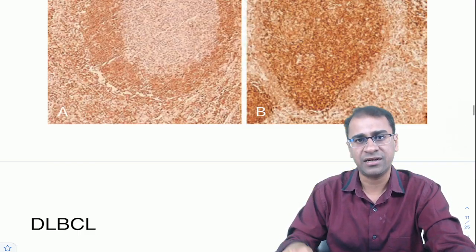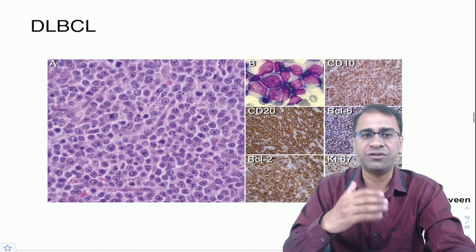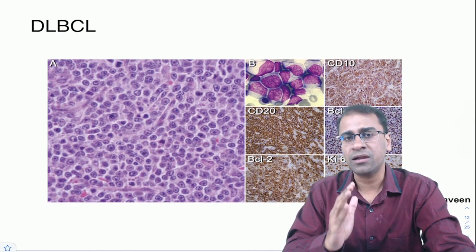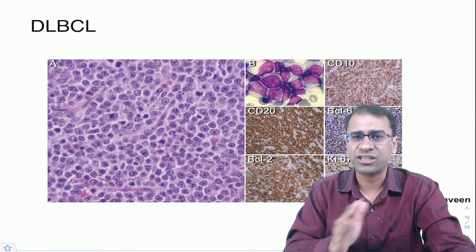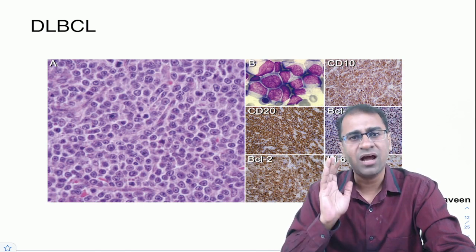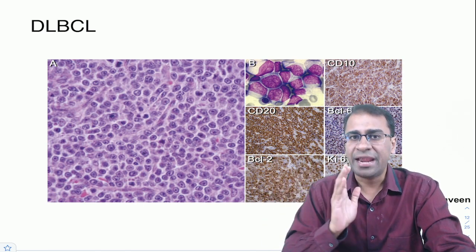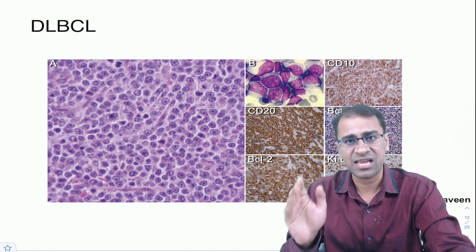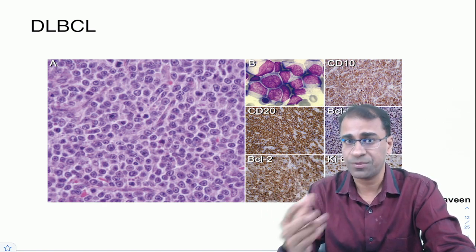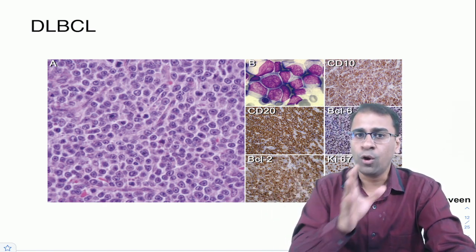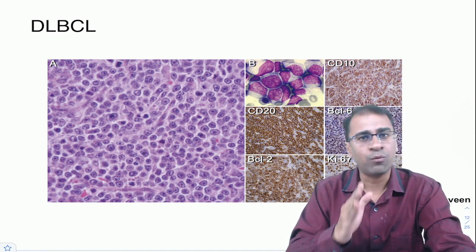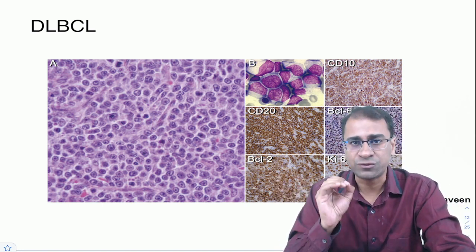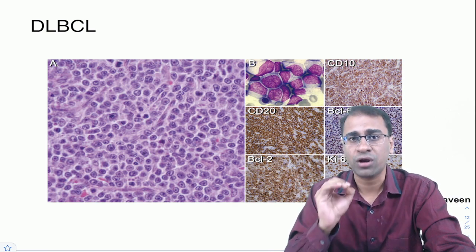Next is diffuse large B cell lymphoma (DLBCL) — the most common NHL and the most common lymphoma of virtually every extranodal organ. It is positive for BCL2 and also BCL6, with BCL6 being more prominent. There are two important variants: an immunodeficiency-related variety, and primary effusion lymphoma, which is importantly HHV8 positive.